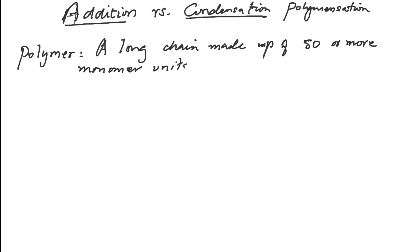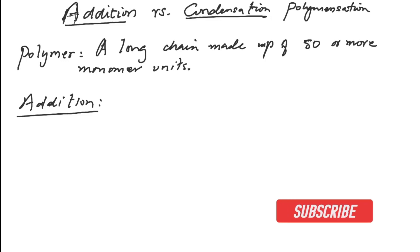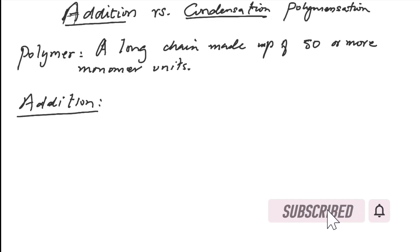There are two types: we have addition and we have condensation. For addition polymerization, the monomer units used to make them are called alkenes, so they're normally referred to as polyalkenes. When they join together, we only get one product at the end — many of the alkene molecules, which are unsaturated, join together and we get one long chain.